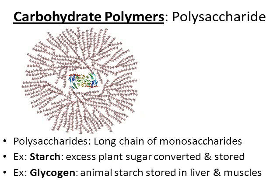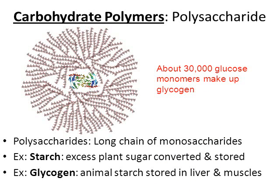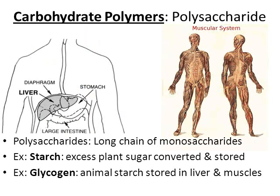The next polysaccharide is glycogen — the animal's version of starch. You don't find glycogen in plants, only in animals, and we store it for energy, primarily in our liver and muscles. Glycogen is a fairly large molecule made from approximately 30,000 glucose monomers. Whenever we're low on blood sugar — after exercising or working hard — our liver and muscles release stored glycogen into our blood to raise our sugar level back up.